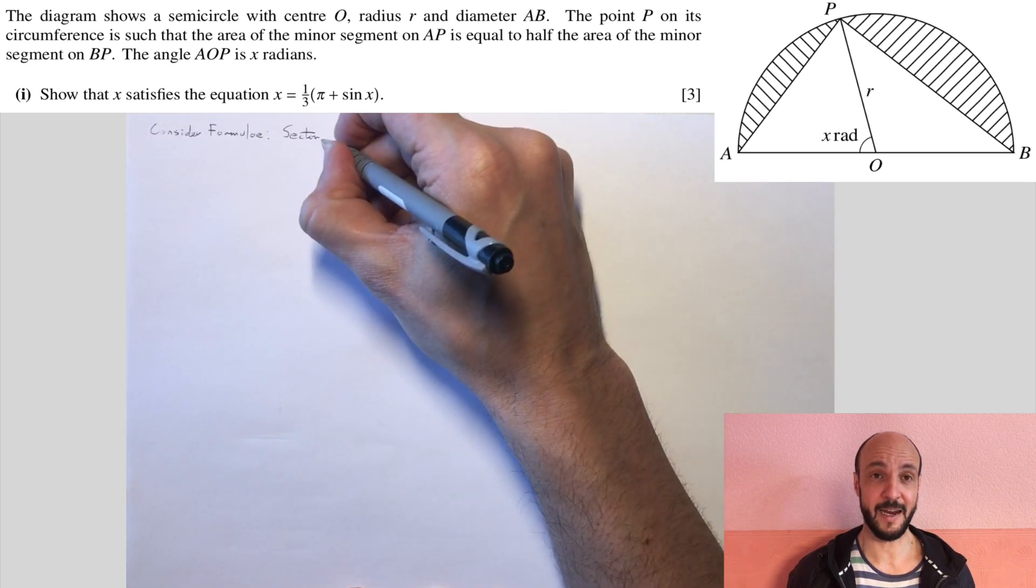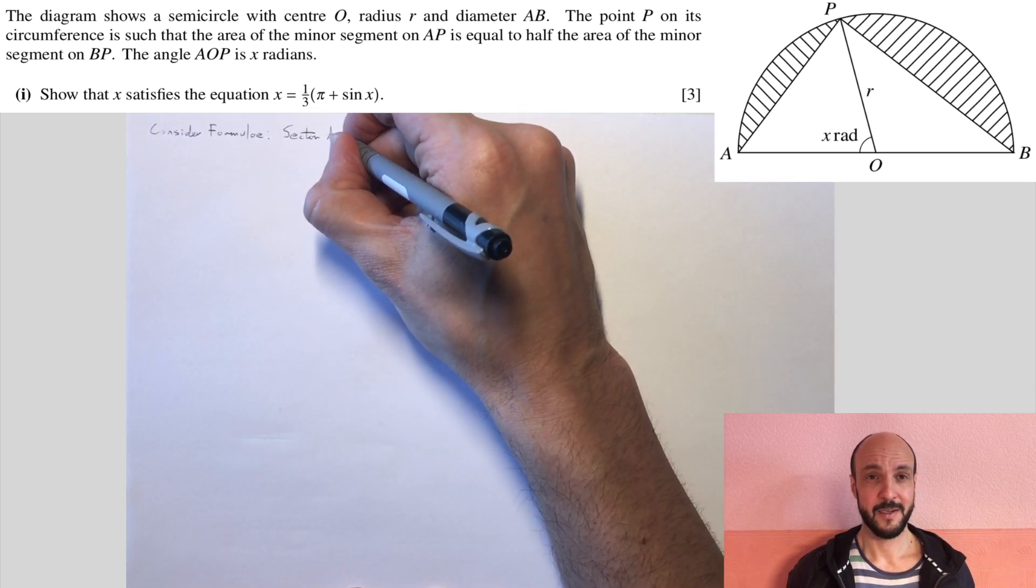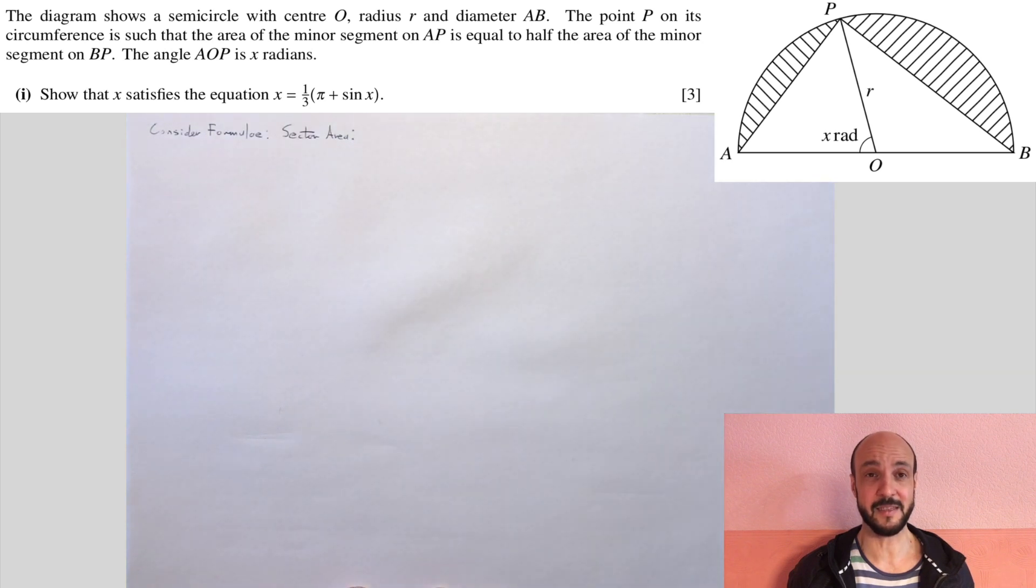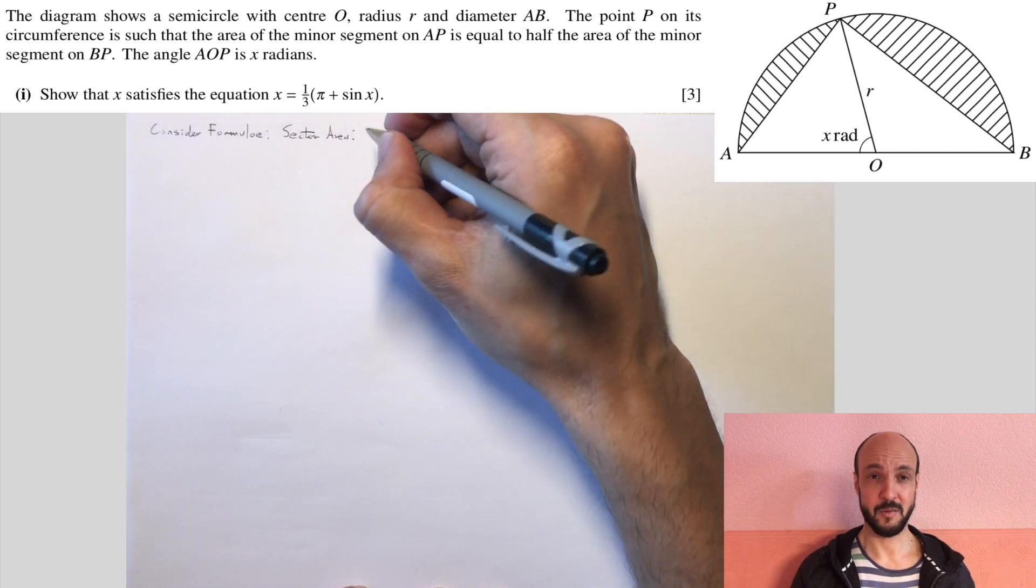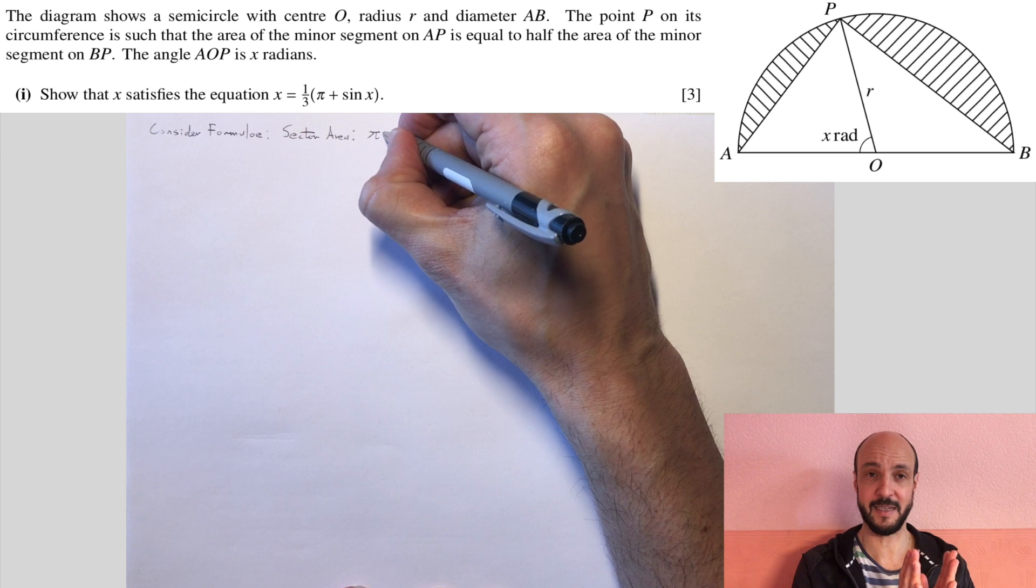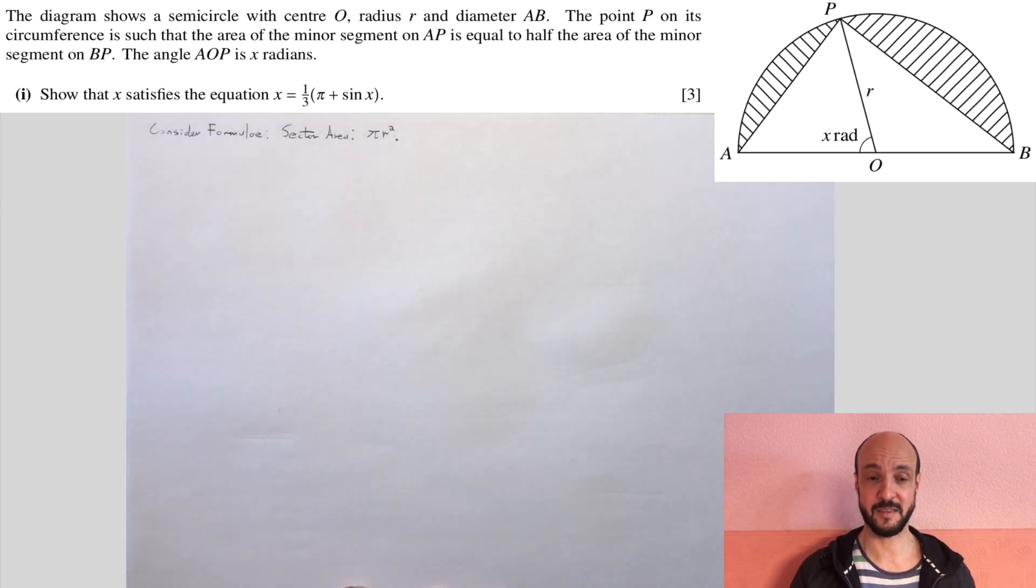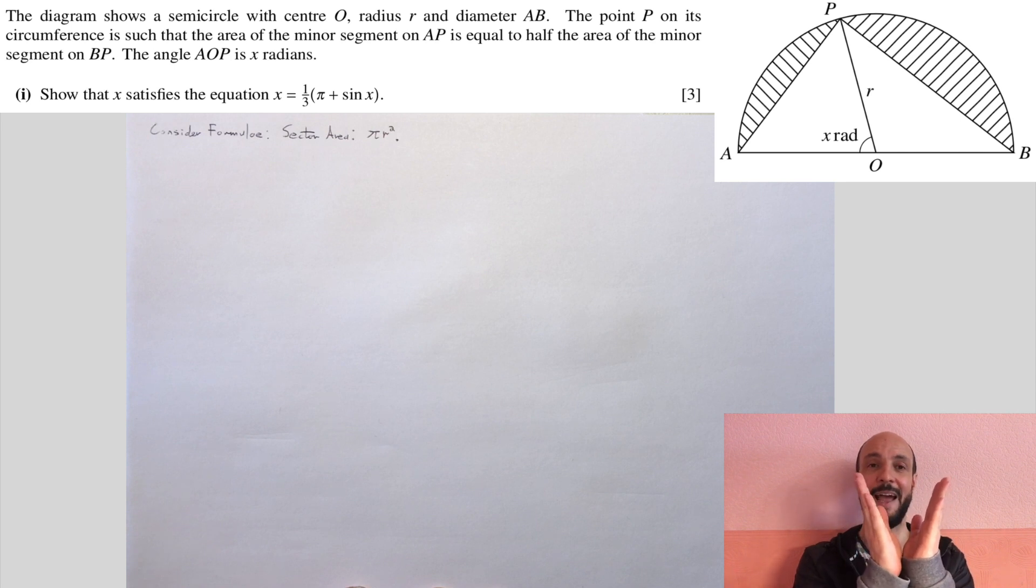Now really there are three formulae that are going to be very important to us here. One is the formula for the area of a sector. Now you don't need to explicitly remember this formula because it makes intuitive sense. We know that the area of a circle is pi r squared. So when we have a sector, when we have a pizza slice out of a circle, we just need to think what fraction of that circle are we taking?